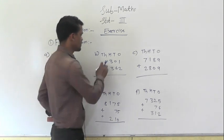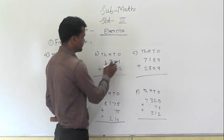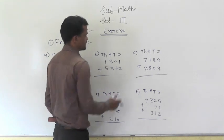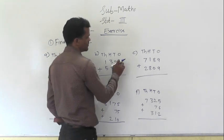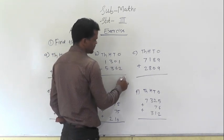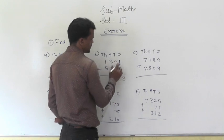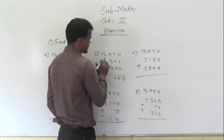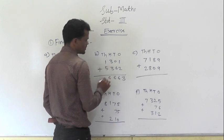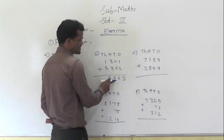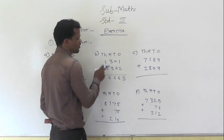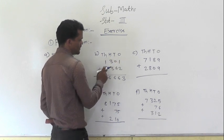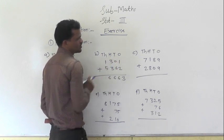Next: 1301 plus 5362. Start from the ones column. 1 plus 2 is 3, 0 plus 6 is 6, 3 plus 3 is 6, 1 plus 5 is 6. 6663 is the sum of 1301 and 5362.